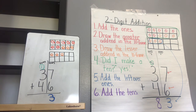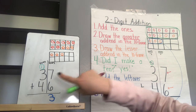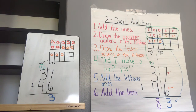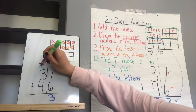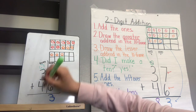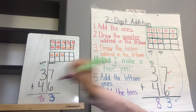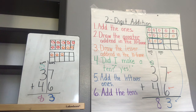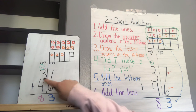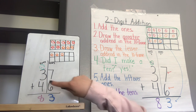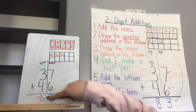The last thing we need to do is add the tens. The tens place is over here. I'm going to add 3 plus 4 equals 7, and one more equals 8. So our answer — our sum — is 83. Let's read the whole problem with the answer: 37 plus 46 equals 83.